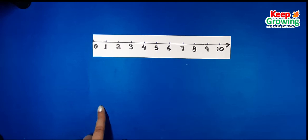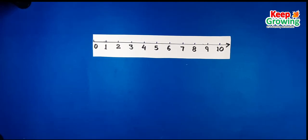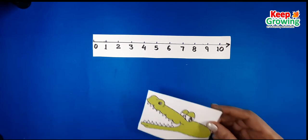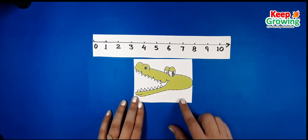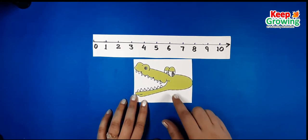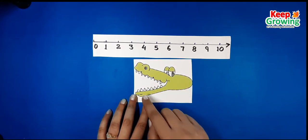The number line is an important teaching tool. Through the number line, children can easily understand the concept. Before we start, you can imagine that you have an alligator — his name is Ali.